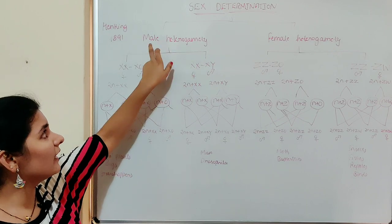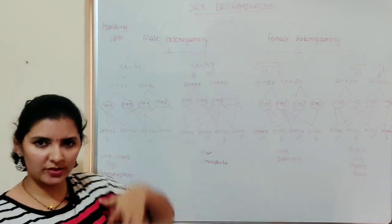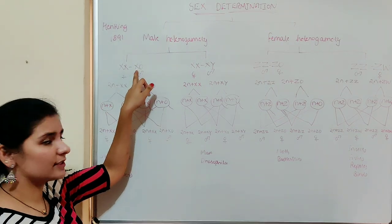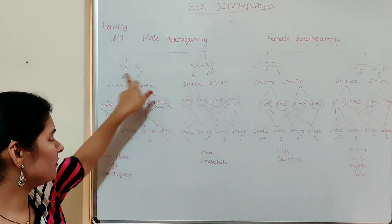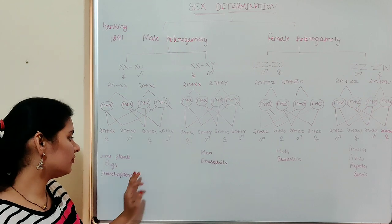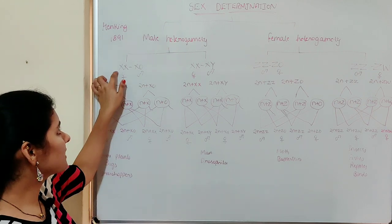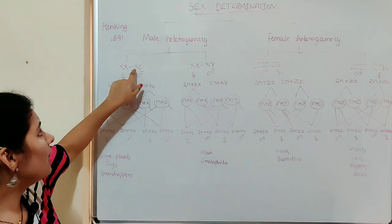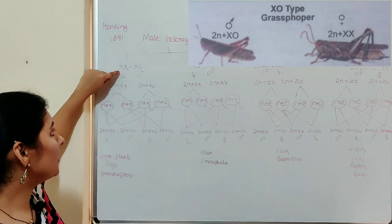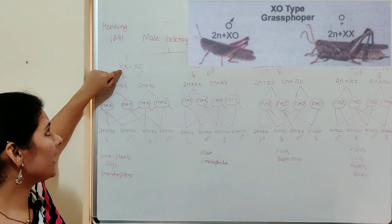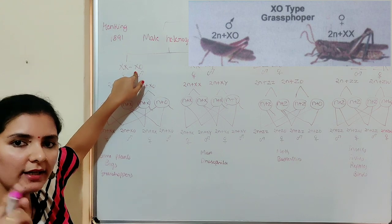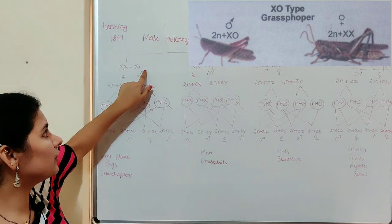The first type under male heterogamety is XX/X0 type of sex determination. This type is seen in some plants, true bugs, and grasshoppers. Since it is a type of male heterogamety, the male produces different types of gametes. Therefore, individuals having two X chromosomes (XX) as sex chromosomes are females, and individuals having only one X chromosome (X0) are males.